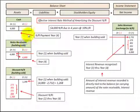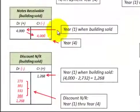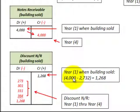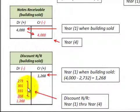Now let's look at how we record our notes receivable, which is an asset on the balance sheet, and our sales revenues, which is part of net income on the income statement. At the beginning of year one, when we sold the building in exchange for a note receivable, we record $4,000 as a debit to notes receivable. We also have a contra revenue account to notes receivable — in year one when the building is sold, we have a $4,000 note receivable minus its present value of $2,732, giving $1,268. This discount gets reduced each year by the interest earned, so we debit interest earned to discount on notes receivable each year, and at the end of year four there's a zero balance in that account.